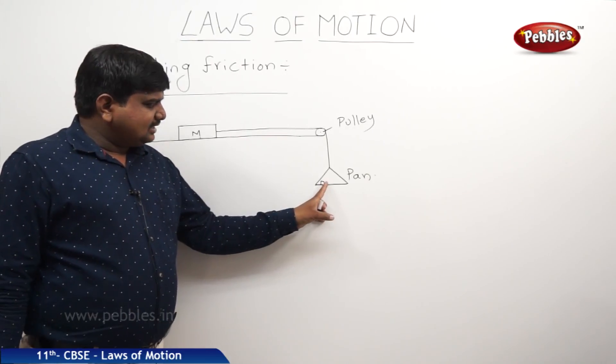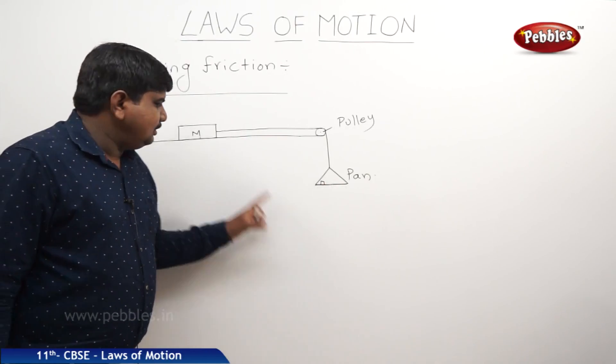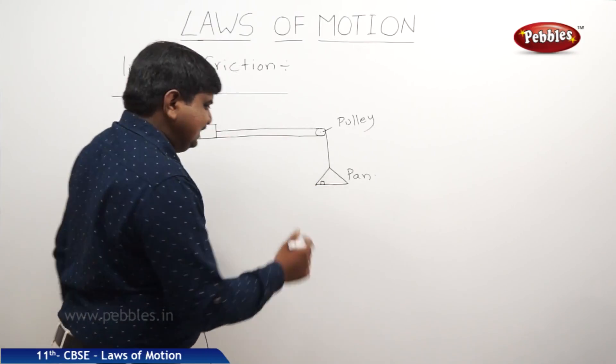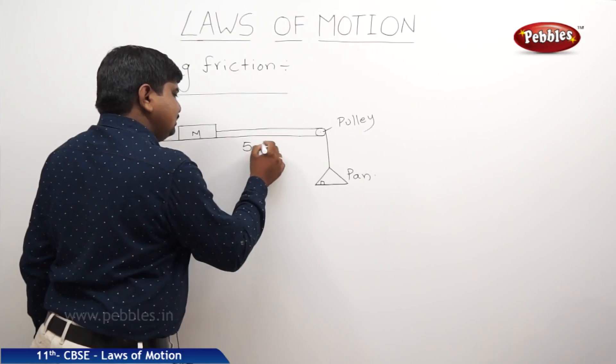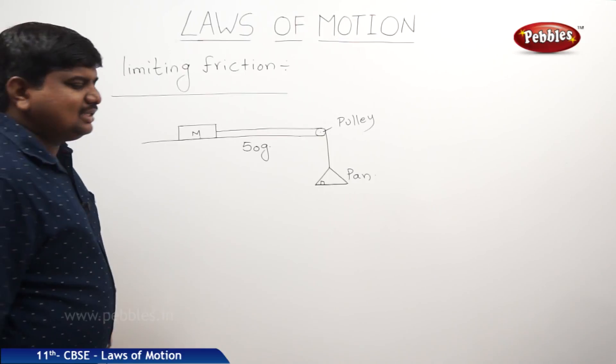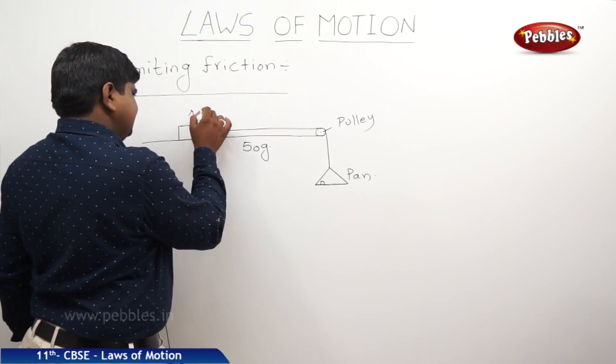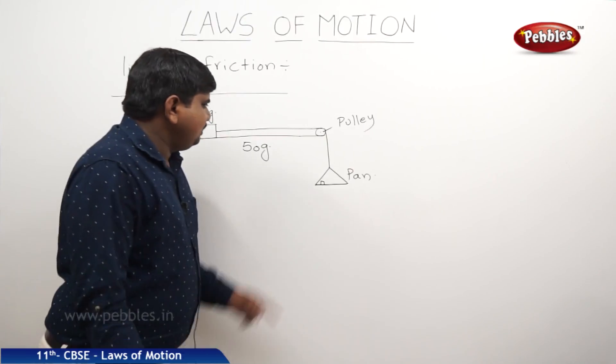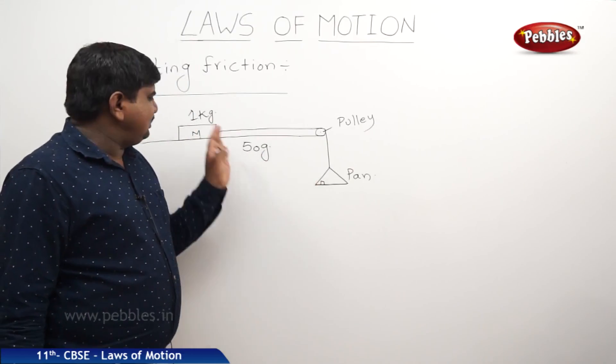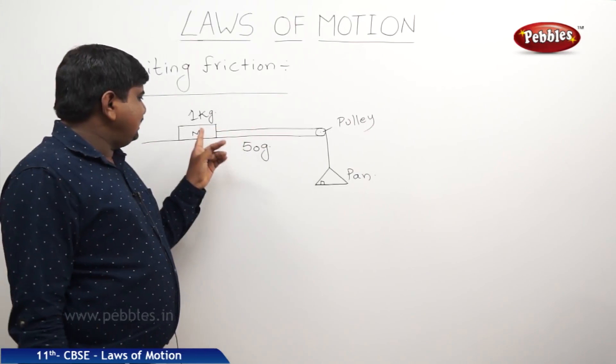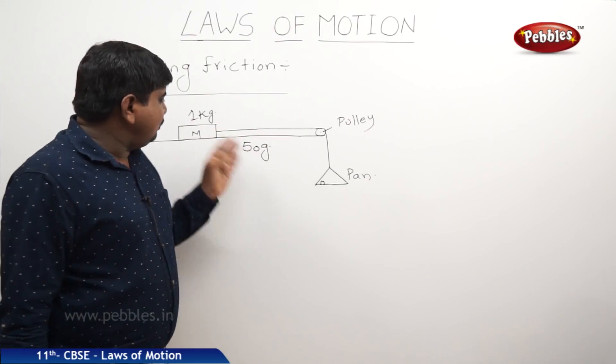Now let us take the finite values of the mass which is adding. Let us take the mass what I am adding is 50 grams each. Let us suppose this body's mass is some 1 kg. So if both forces are equal the body won't move. The force what I am adding should be more than this 1 kg force, then only the body will move.